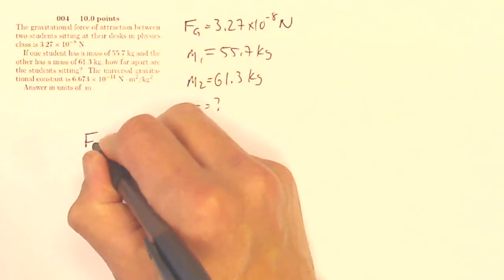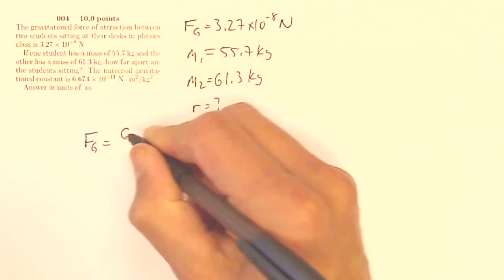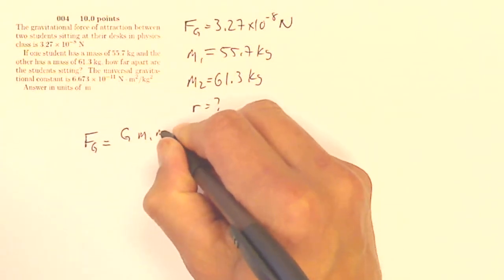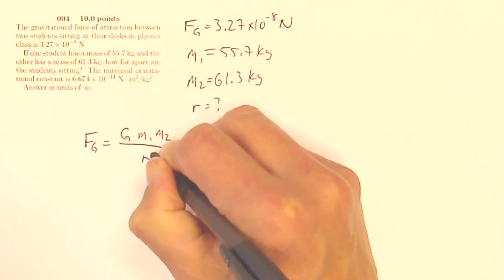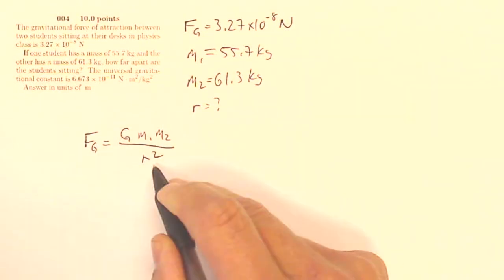Well, my force of gravity is going to be G, the universal constant, times the first mass, times the second mass, divided by the distance between them squared. If I rearrange this,